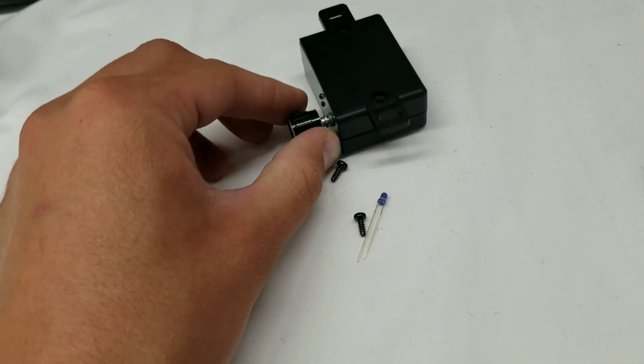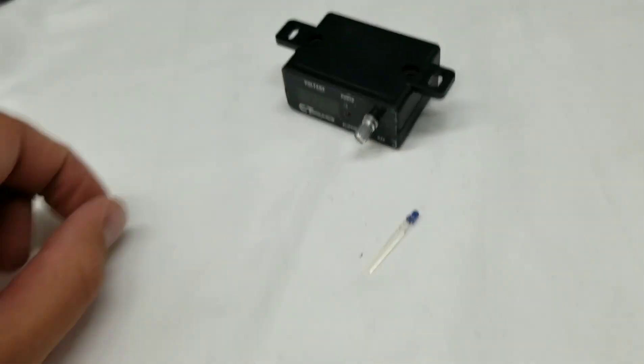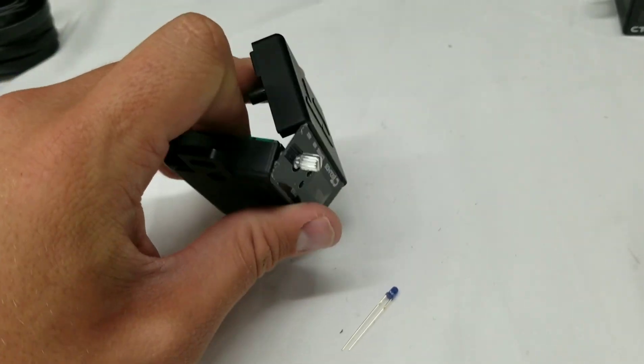So if I pop this knob off, like so, and take these two screws out from the top, the two halves will separate. They're kind of glued onto this front piece.